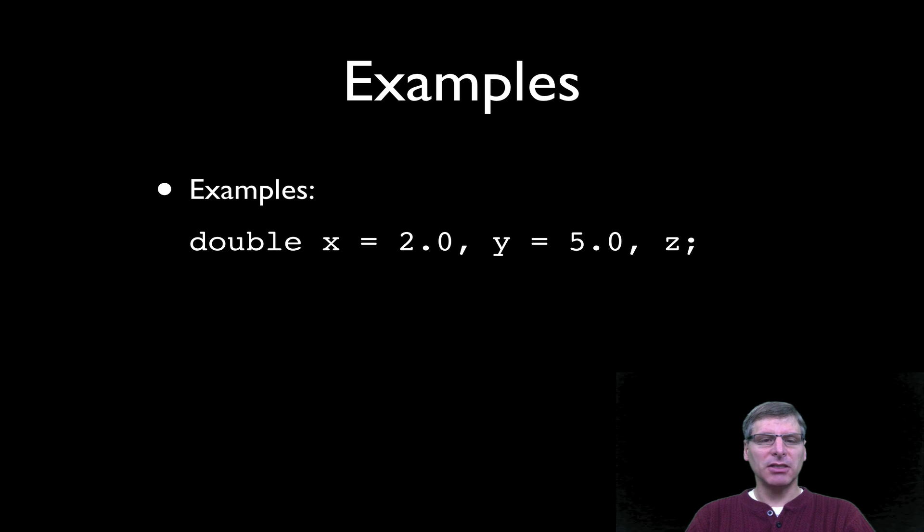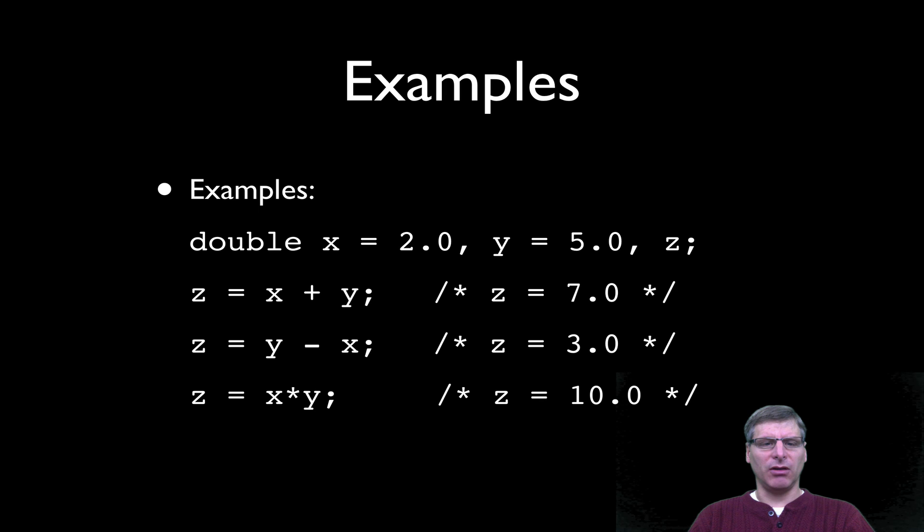So here are some examples. So let's assume we have a variable x defined as a double, and we've assigned it to 2.0 initially, and we also define a variable y with a value of 5.0, and we've defined a variable z but left it undefined. So in this first expression, we have z equals x plus y. So it's basically going to do the simple addition, giving us the value of 7.0 in z. In this next example, we're subtracting x from y, which leaves us a value of 3.0 in z. And in this expression here, we're doing a simple multiplication, 2.0 times 5, x times y, which gives us 10. And finally a division where we divide y, which is 5.0 by x, which is 2.0, giving us 2.5. Quite straightforward so far.